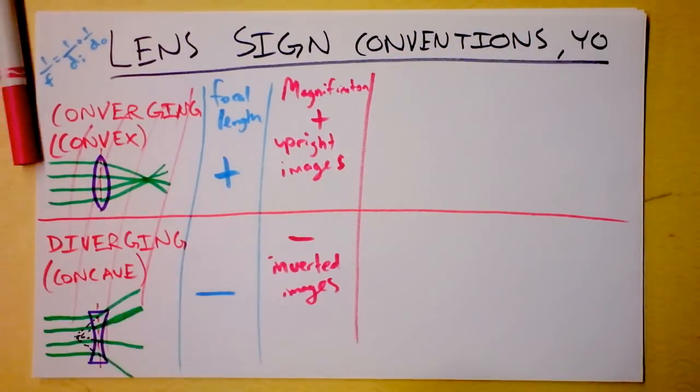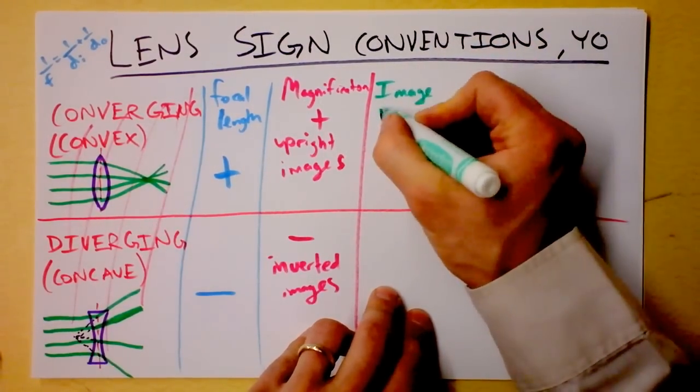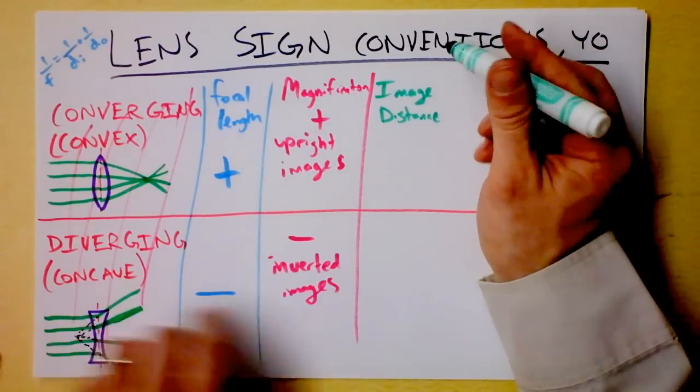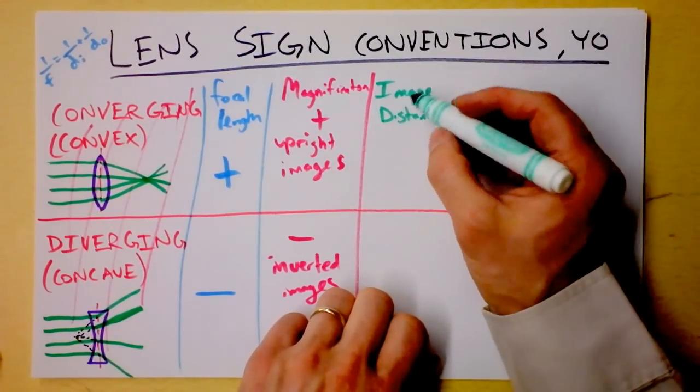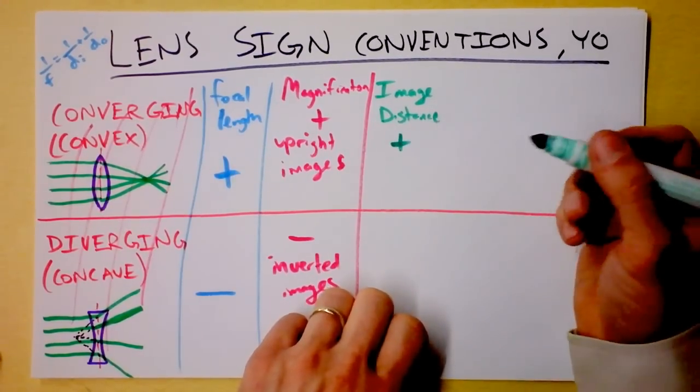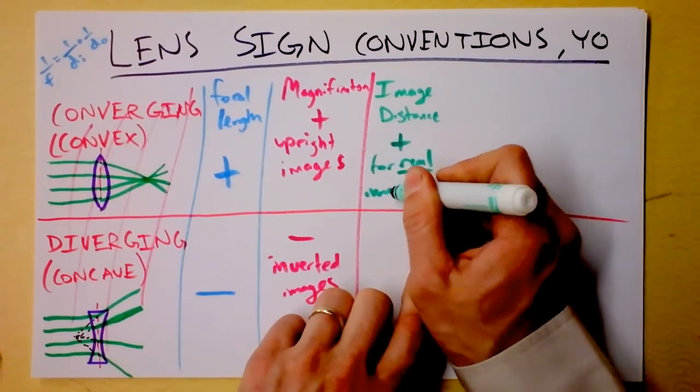What about seafoam green for image distance? Image distance can be negative? Sure, it would be with a diverging lens, for instance. Image distance is going to be positive if we've got a real image. For real images.